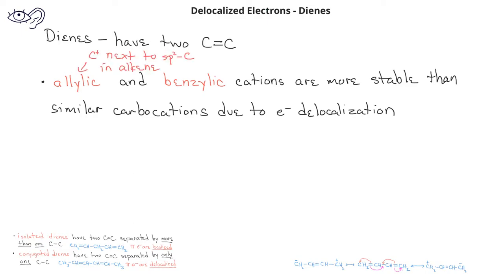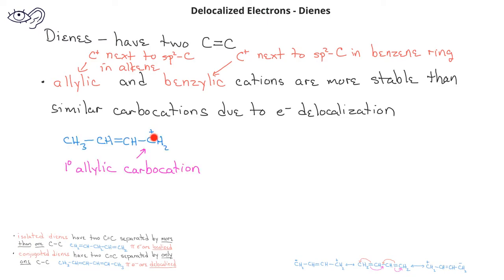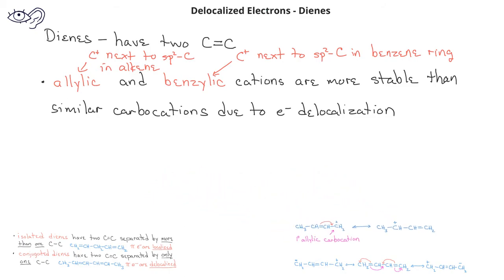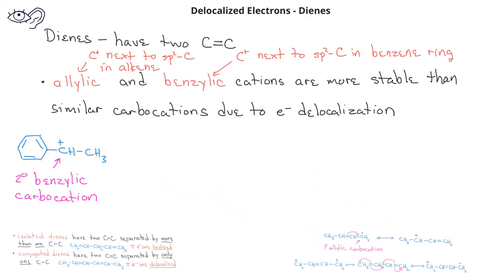Allylic cations are those carbons that have a positive charge and are next to an sp2 carbon in an alkene. A benzylic cation is a carbon with a positive charge that is next to an sp2 carbon in a benzene ring. Allylic carbocations are stable because the pi electrons can be donated to the carbocation, shifting the positive charge over a few carbons. Benzylic cations are also stable because the pi bonds in the benzene ring can be donated to the carbocation, resulting in a positive charge on the ring.